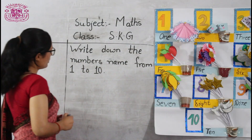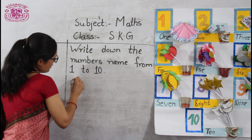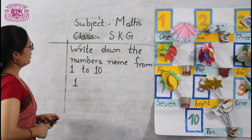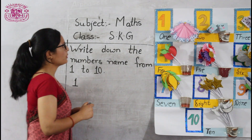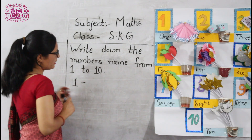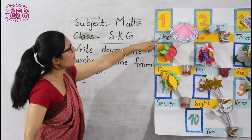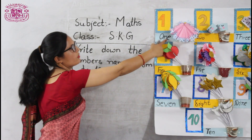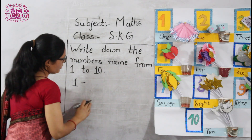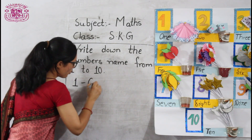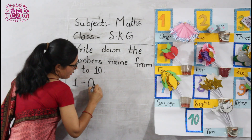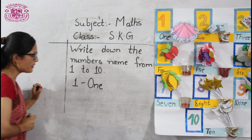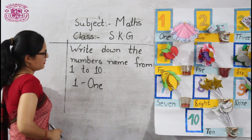Okay, look here. This is 1. We already learned this. What is the spelling of 1? O-N-E. Very good. Okay, we are going to write here: O-N-E, 1.